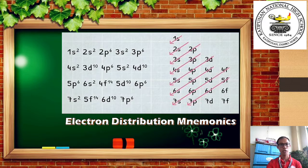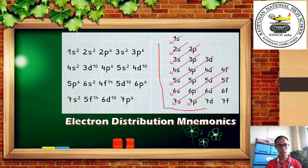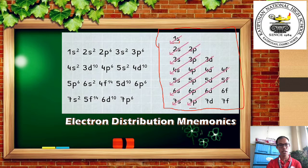This is how it works. The order of increasing energy levels together with the electrons in them is determined by following the arrow. As you notice, we will focus on this electron distribution mnemonics. Following the arrow, the arrow starts from 1s and ends in 7p. If we are going to rewrite it from 1s to 7p, following the arrow, you will come up with this sequence.